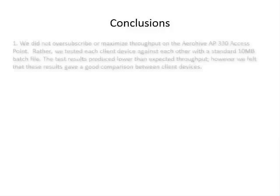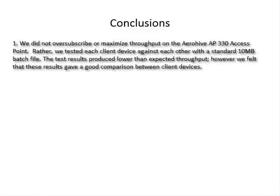The conclusions from our experiment. First, we did not oversubscribe or maximize throughput on the Aero 5 AP330 access point. Rather, we tested each client device against each other with a standard 10 Mbps batch file. The test results produced lower than expected throughput; however, we felt that these results gave a good comparison between client devices.